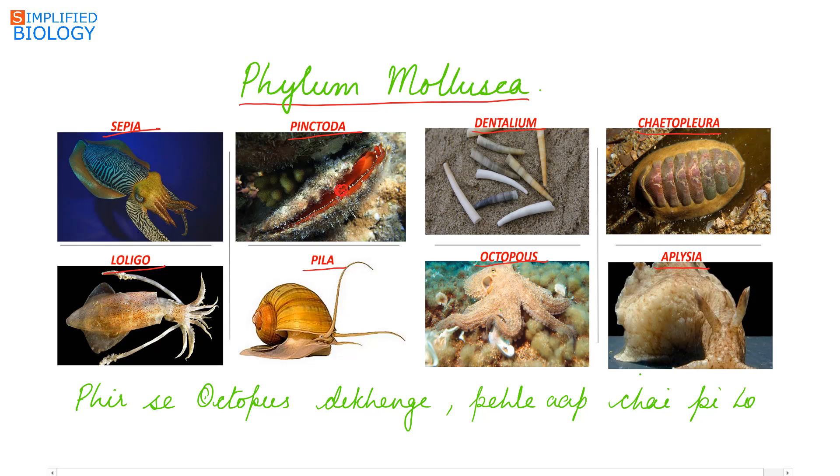A trick to remember is: first say Octopus, then add 'dekhenge pehle aap chai pilo'. P of pilo is for Pintoda, S is for Sepia, O is for Octopus.